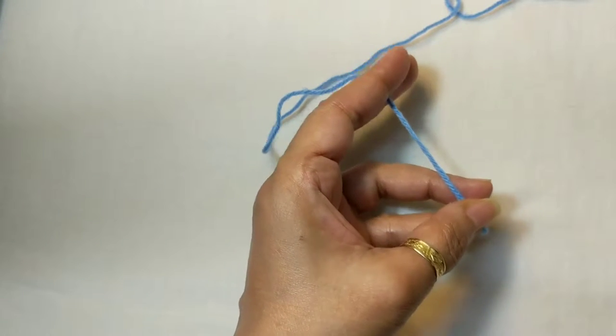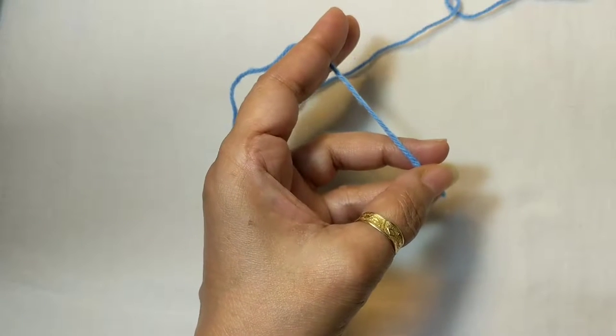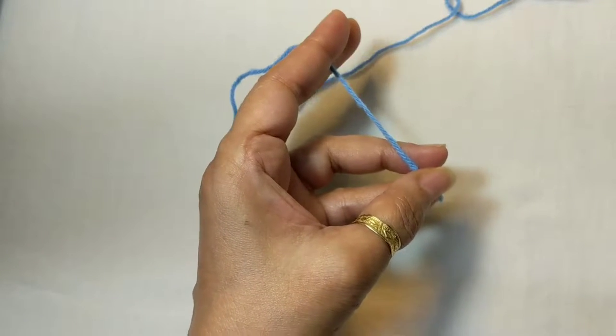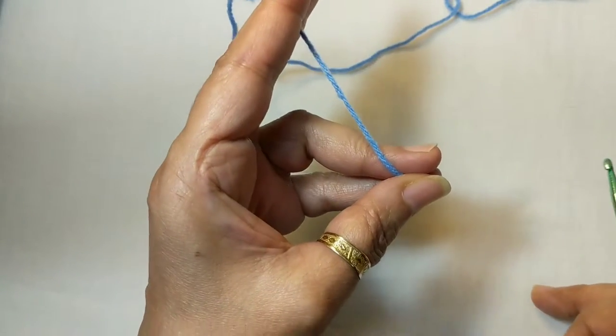Hello and welcome back. This is Sweet Nothings Crochets videos. Today we're going to make what is called the sloppy slip knot, which is also a starting slip knot and a new way to do it.